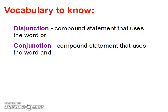Vocabulary to know: a disjunction is a compound statement that uses the word 'or,' and a conjunction is a compound statement that uses the word 'and.' With a disjunction, you might also find a union symbol being used when dealing with interval notation.